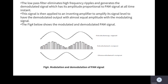The low pass filter eliminates the high frequency ripples and generates the demodulated signal whose amplitude is proportional to the PAM signal at all times. The signal is then applied to an inverting amplifier to amplify its signal level so that the demodulated output has almost equal amplitude to the original modulating signal. The figure shows the modulated and demodulated PAM signal — the first waveform is the modulating signal, the second is the modulated signal, and the third is the demodulated signal.